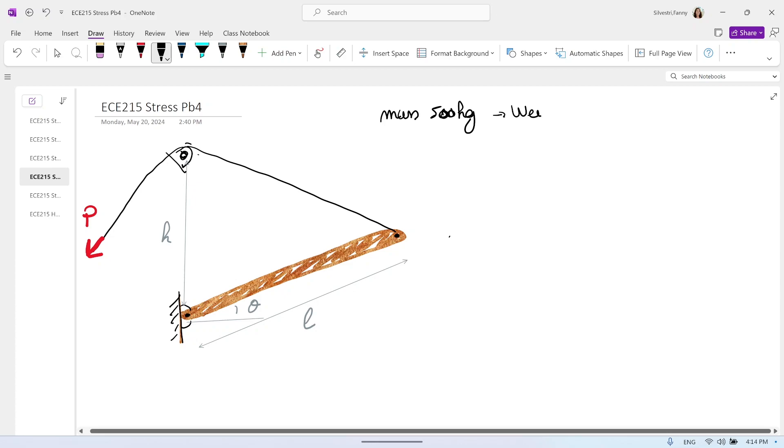Don't forget that kilograms is the mass. So to have the weight, you need to multiply by 9.81. So the weight will be 500 times 9.81. That will be 4,905 newton. Don't forget to convert mass to weight when you have internal units.